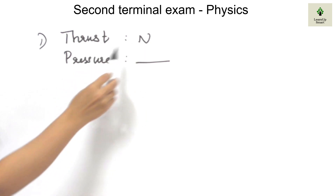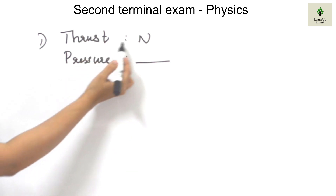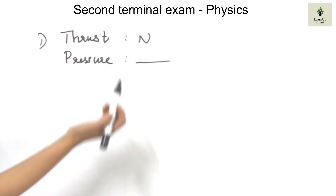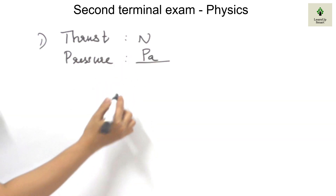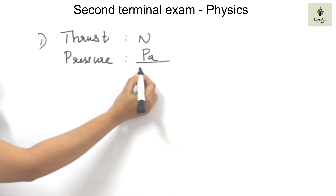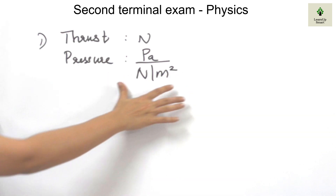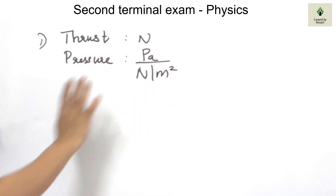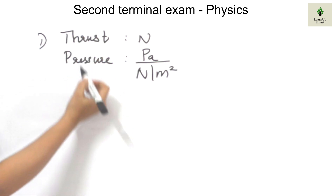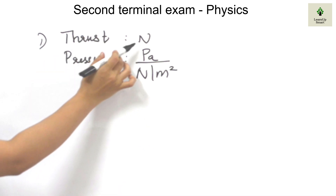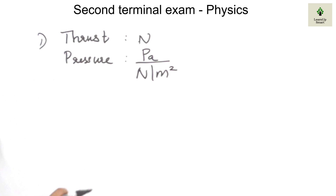What is the thrust? What is the pressure? We don't know how to use these units. The thrust unit is Newton. The pressure unit is Pascal — Pascal is a capital P, small p. If we ask the unit for force, the unit is Newton. If we ask for thrust, the unit is also Newton. That's not a problem.